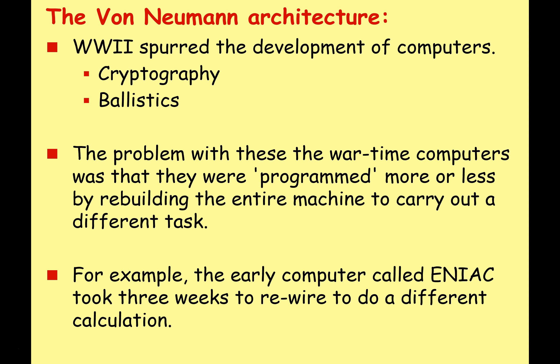The problem with these wartime computers was that they were programmed more or less by rebuilding the entire machine to carry out a different task. You had to go in, rewire it, and change all the valves and cylinders before you could run a different program. For example, the American ENIAC system took three weeks to rewire to do a different calculation. So can you imagine that applied to today's computers? If I'm finished using Word and want to run Excel, I'd have to completely rebuild all my circuits — taking weeks to run a new program. We needed a better way of doing that.